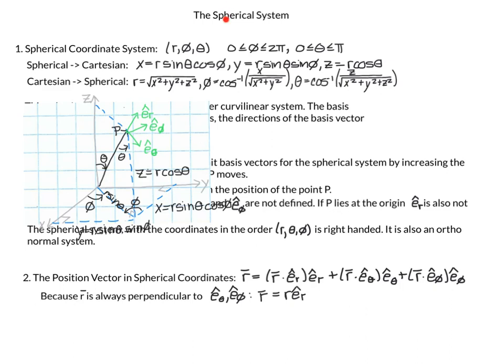In this video we are going to talk about the spherical system, which is our second example of a curvilinear system, the first one being the cylindrical system that we discussed in the previous video. This is our overview slide which we'll spend maybe three or four minutes on, and then we'll go through each topic in more detail and with more examples.